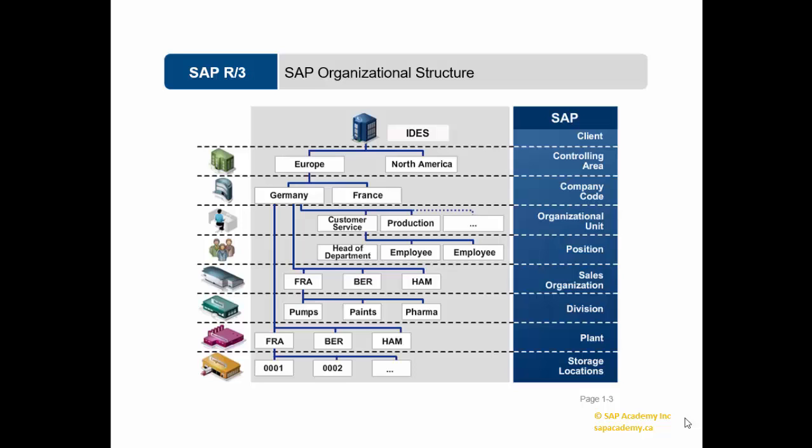Plant: A plant is an organizational unit within a company where activities take place. A plant will produce goods and make goods available for the company. It is a unit having a manufacturing facility, warehouse distribution center, or regional sales office within logistics. It subdivides an enterprise in different aspects.